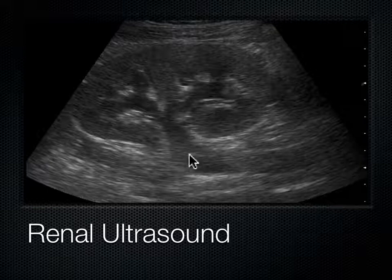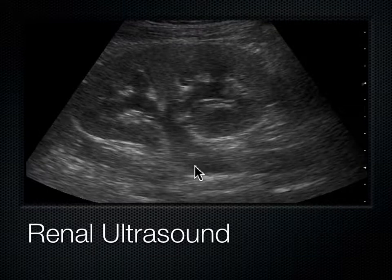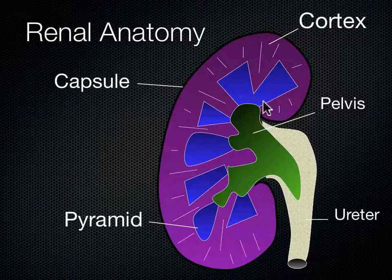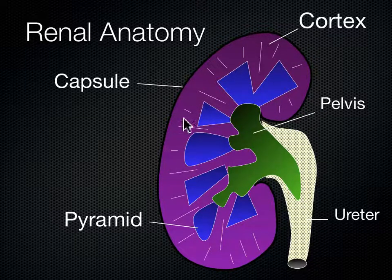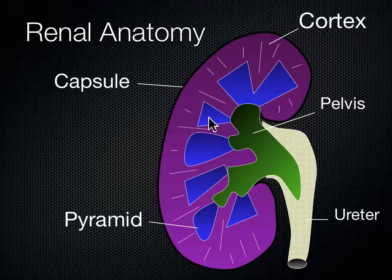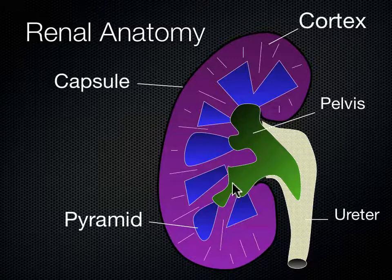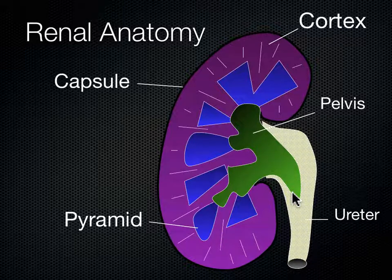Once the ureter exits the kidney, we no longer see it. This schematic diagram of the kidney shows the capsule structure, the cortex where all the nephrons are, the pyramids full of urine, and the renal pelvis — sometimes called the renal sinus — which drains down the ureter into the bladder.